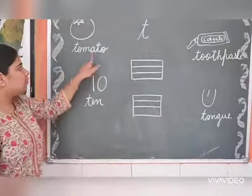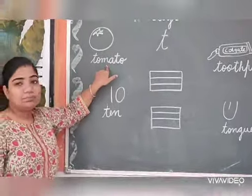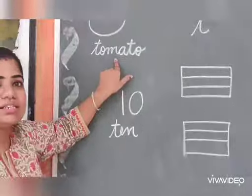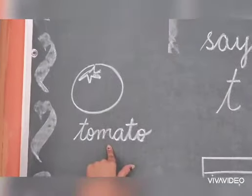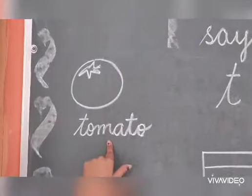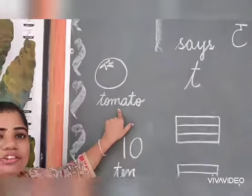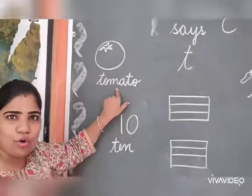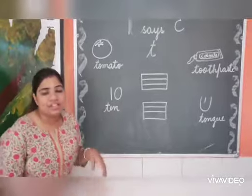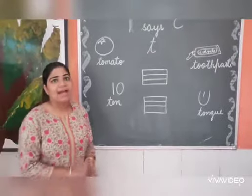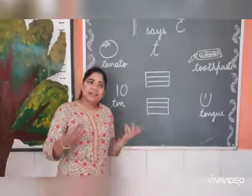So, what is this? This is T for Tomato. Repeat after me — T, Tomato. Do you know tomato is a vegetable and it is red in color.